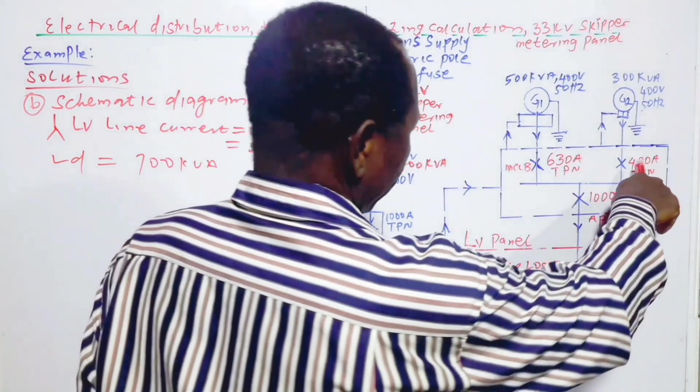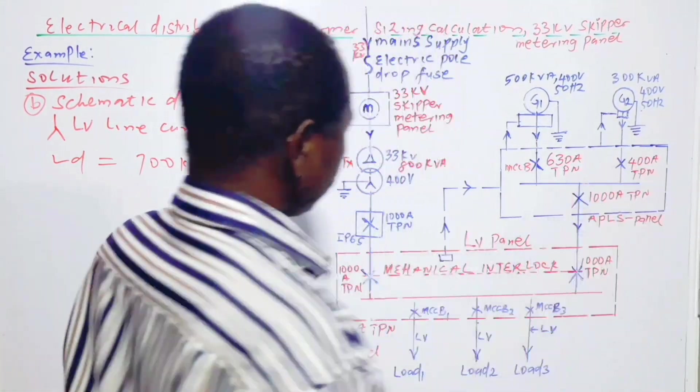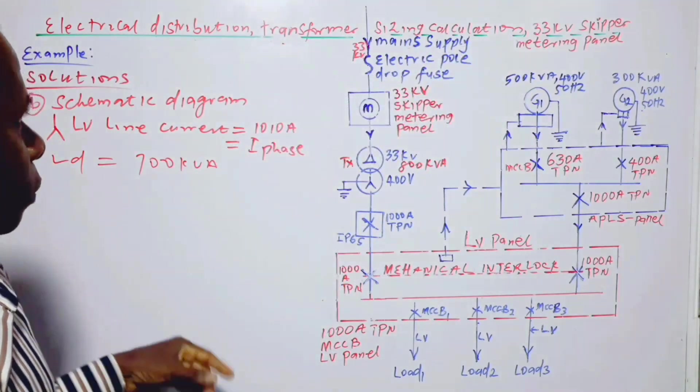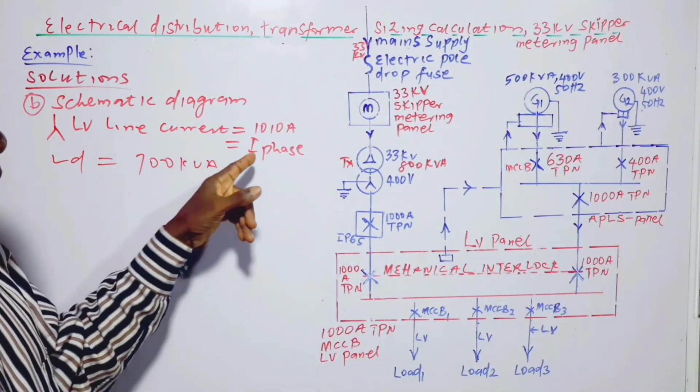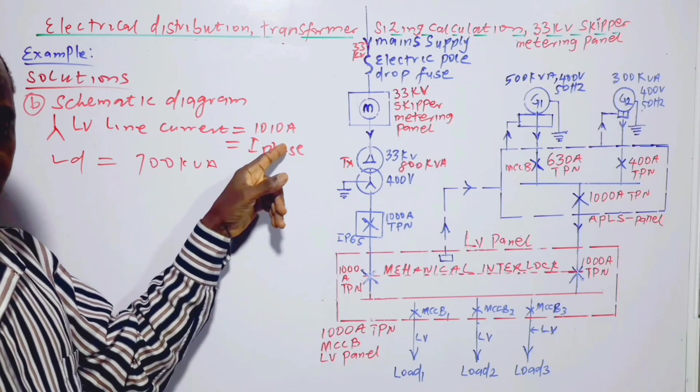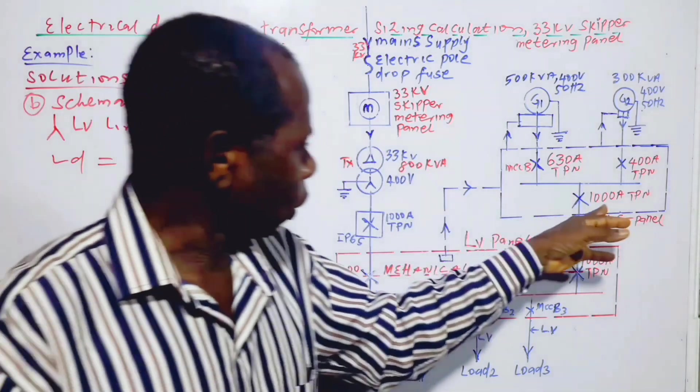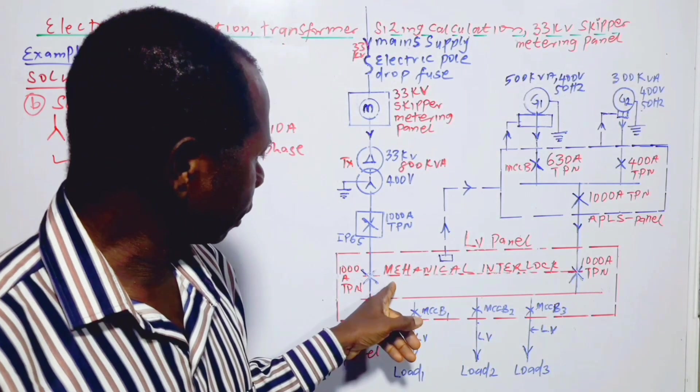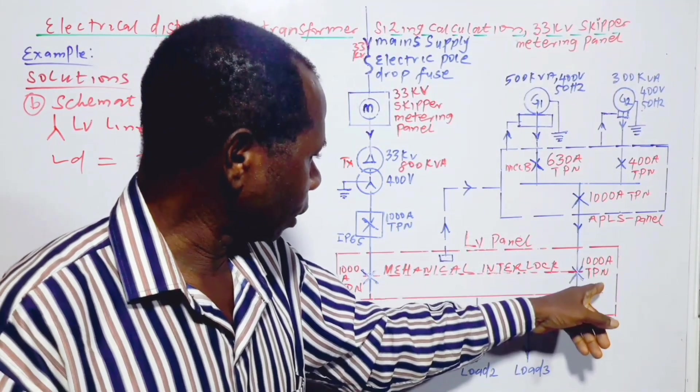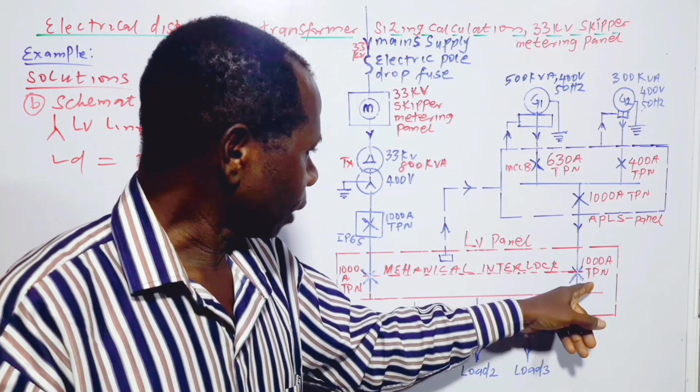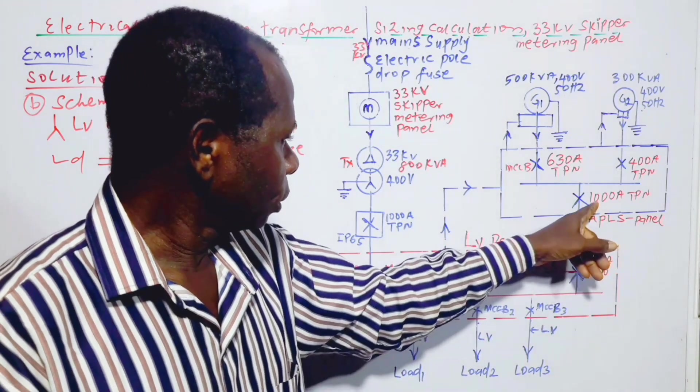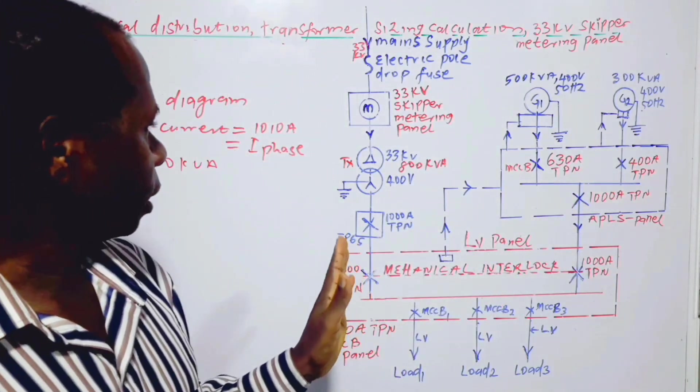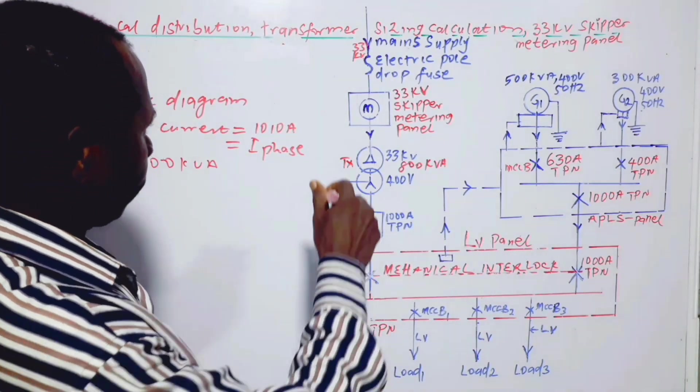So that you will have the two together, it will give us about around 1030 amp, which is slightly greater than this. So it's still in order. Now we come here, this is the interlock, so we have the same 1000 amp circuit breaker here. This is the one we can easily find in the market for this situation.